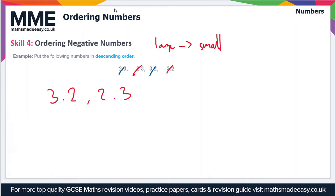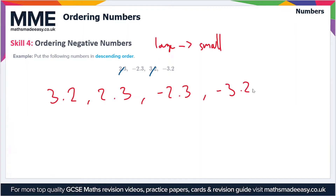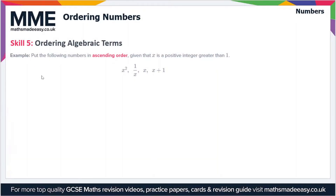Going back to the two negative numbers: the larger the number after the minus sign, the more negative it is and therefore the smaller we consider it to be. So we consider -2.3 to be larger than -3.2, because -3.2 is more negative. All the numbers are now in descending order: 3.2, 2.3, -2.3, -3.2.